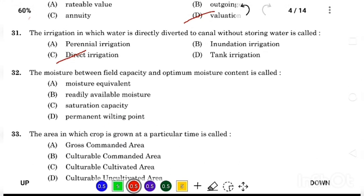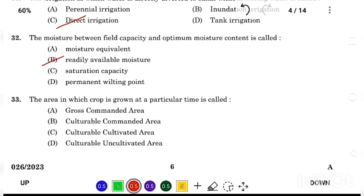The moisture between field capacity and optimum moisture content is called Answer Option B, readily available moisture. The area in which crop is grown at a particular time is called Answer Option C, culturable cultivated area.